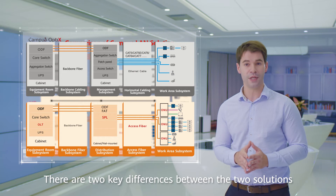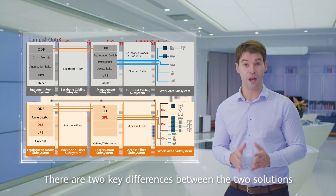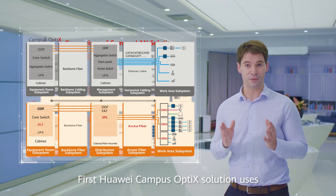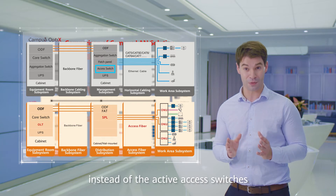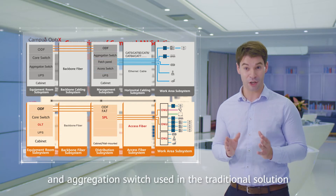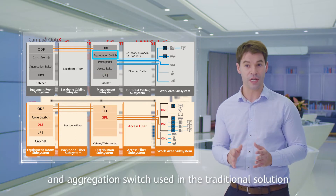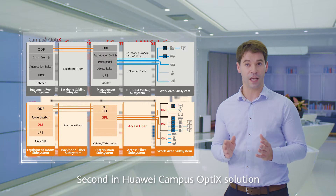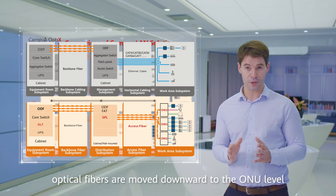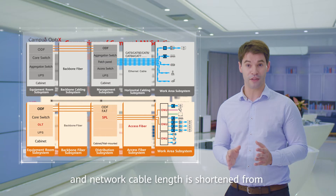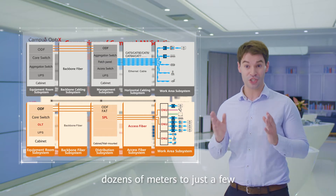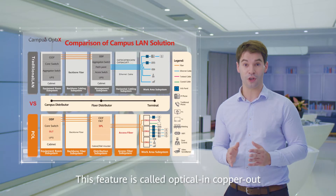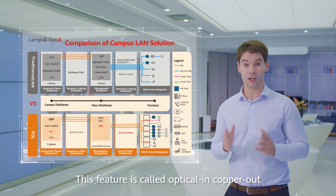There are two key differences between the two solutions. First, the campus optics solution uses passive optical splitters instead of the active access switches and aggregation switches used in the traditional solution. Second, in the campus optics solution, optical fibers move downward to the ONU level and network cable length is shortened from dozens of meters to just a few. This feature is called optical in, copper out.